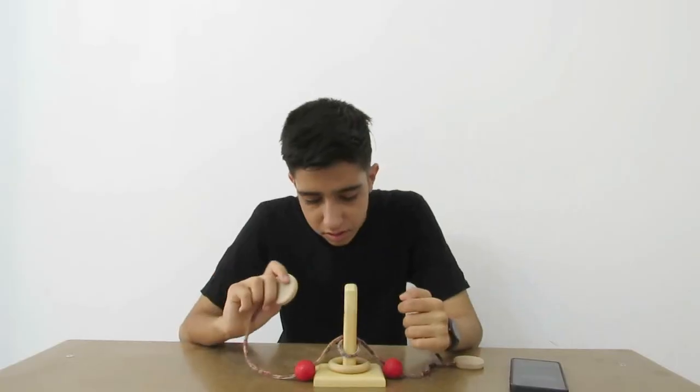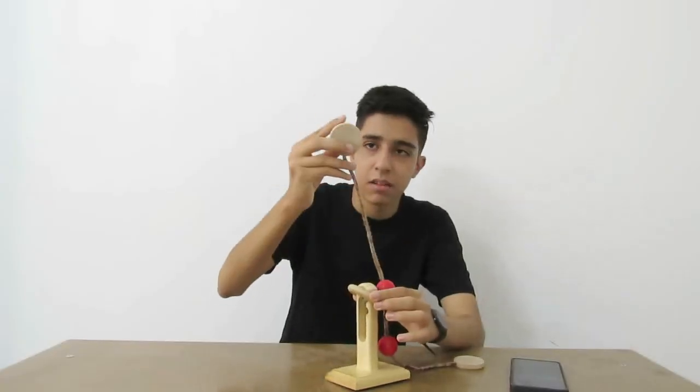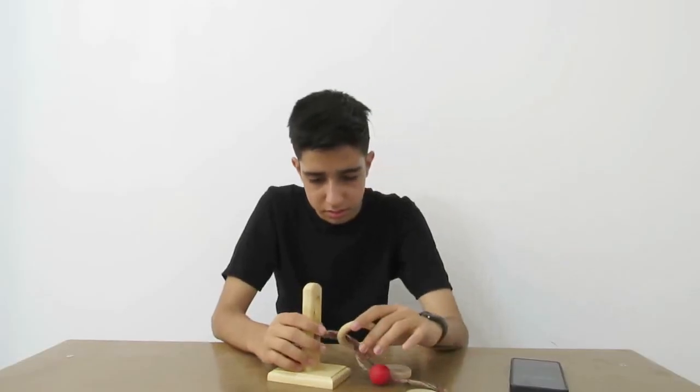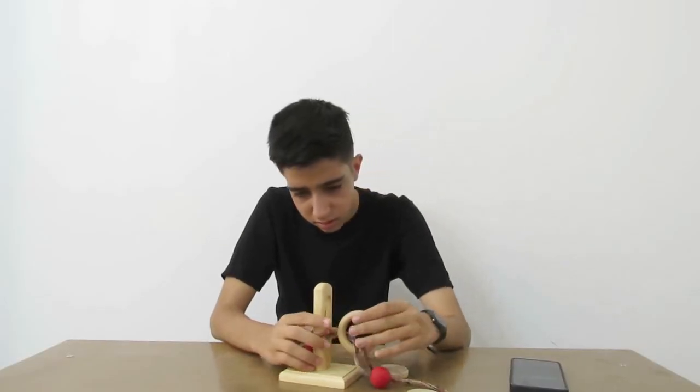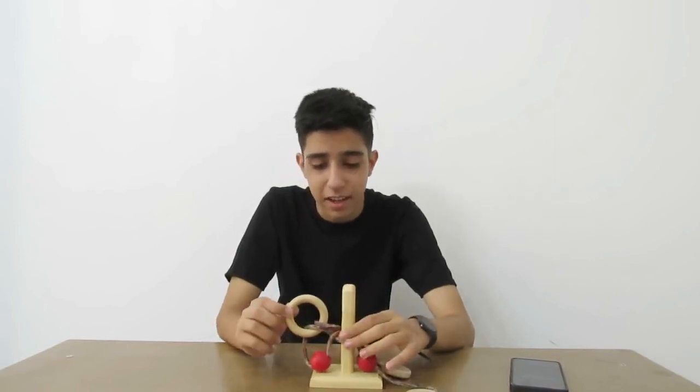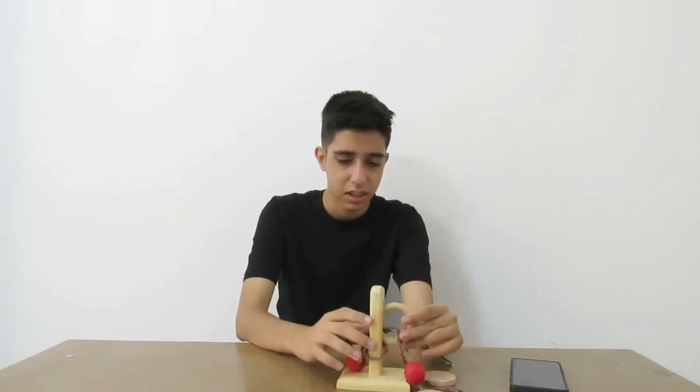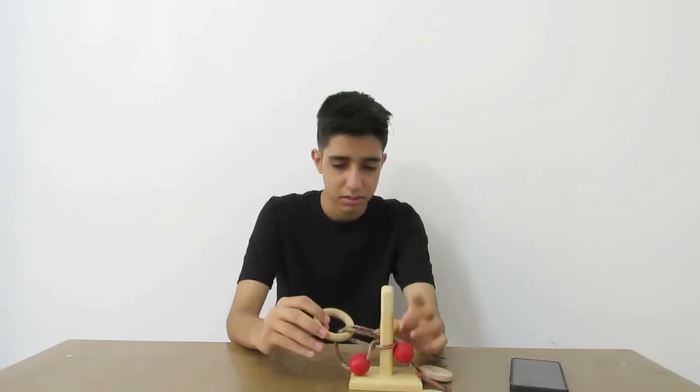It seems to me that in general, the key to the solution may be the interaction with the ring itself. For example, a ring, just like a coin, can go through a hole in a pole, and I think it's probably worth using it this way.